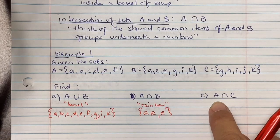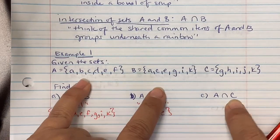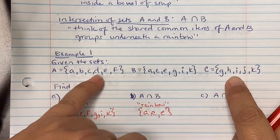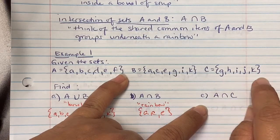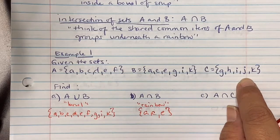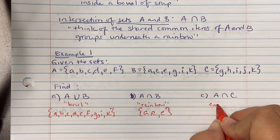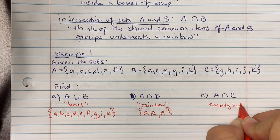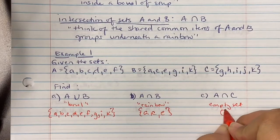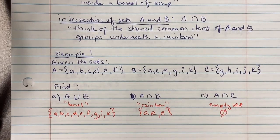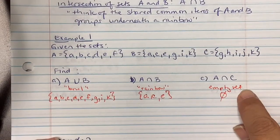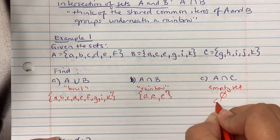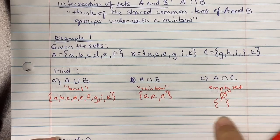Part C asks for the intersection of A and C. Set A has {a, b, c, d, e, f} and set C has {g, h, i, j, k}. They have nothing in common, so this is known as an empty set or nil set. You can write it as 'empty set,' 'nil set,' or using set builder notation with nothing inside it.